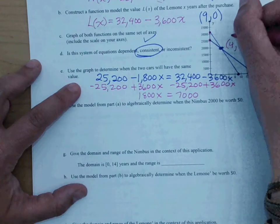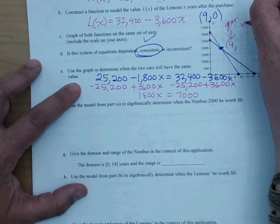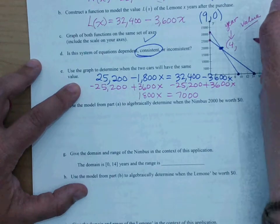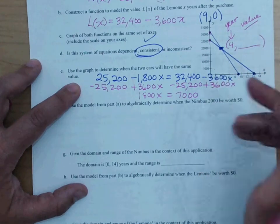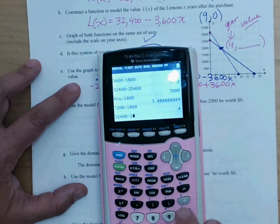And what is the value? So that's the year after 4 years. And what would the value be? Well, if I plug in x equals 4, I'll get the value. It looks like the value is 20,000. But let's just be sure. So if I take 32,400 and I subtract, no sorry, 3,600 times 4.